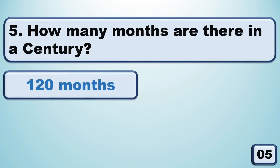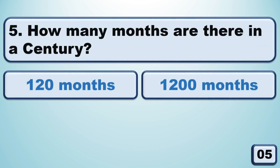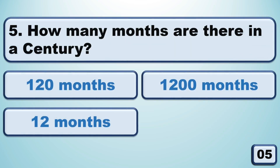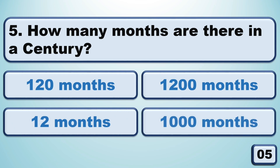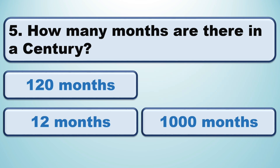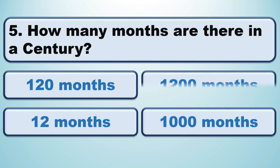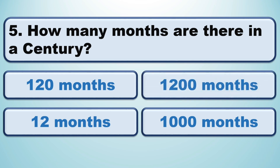How many months are there in a century? 1200 months.